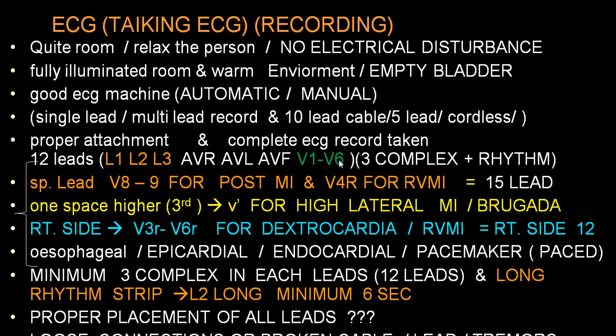Apart from the standard 12-lead ECG, there is a 15-lead ECG taken when we suspect right ventricular MI (RVMI). We suspect this when there are changes in V1, inferior wall changes in Lead 2, Lead 3, and AVF, along with ST elevation in V1 and V2. In that case we take V3R, V4R, V5R, and V6R — by and large V4R, V5R, and V6R are taken — giving a much better idea regarding RVMI.